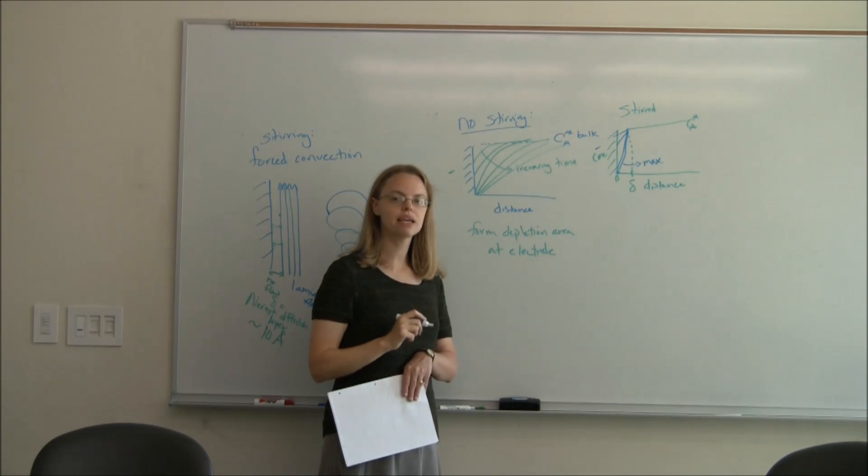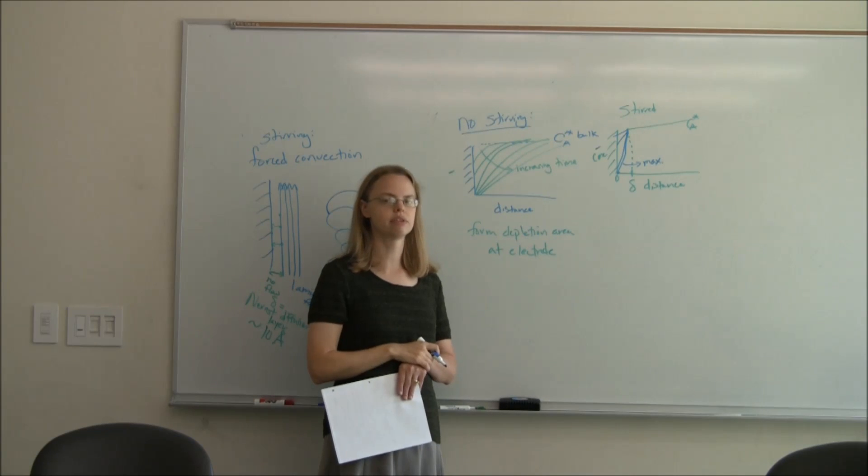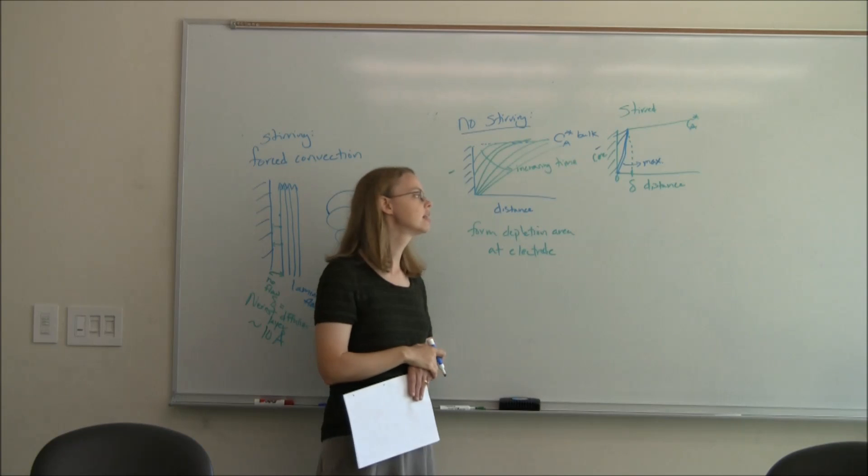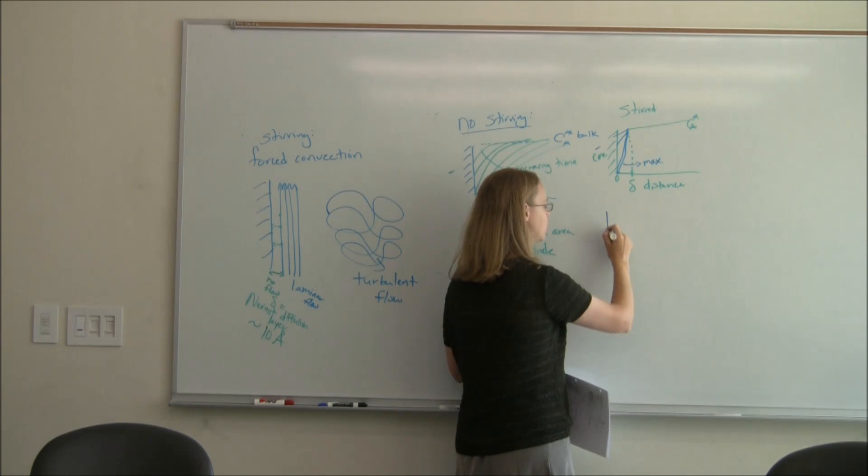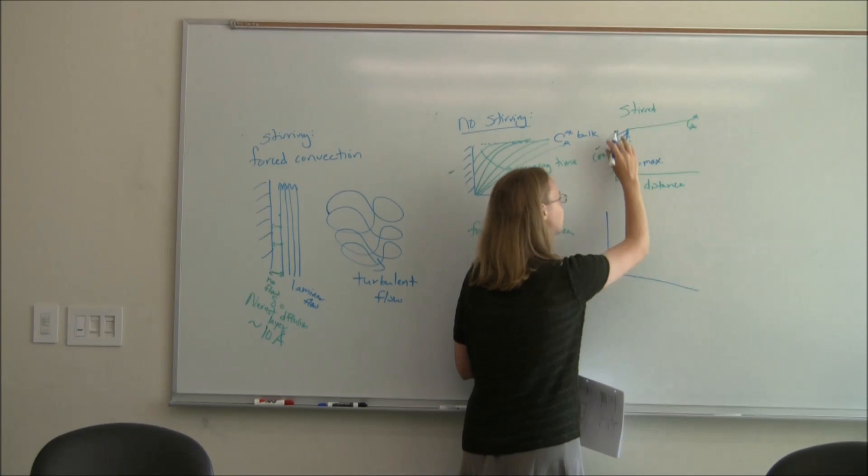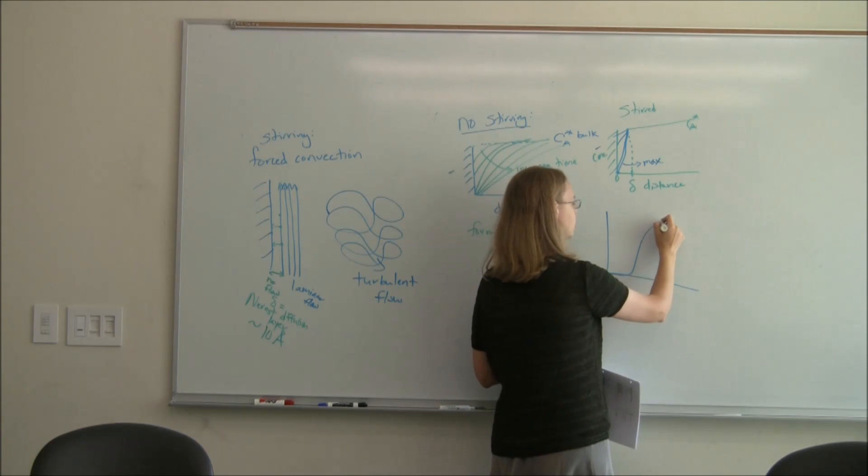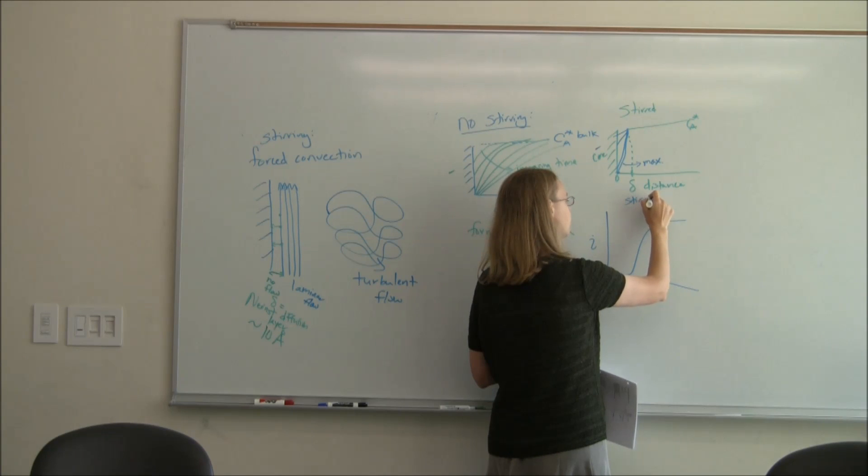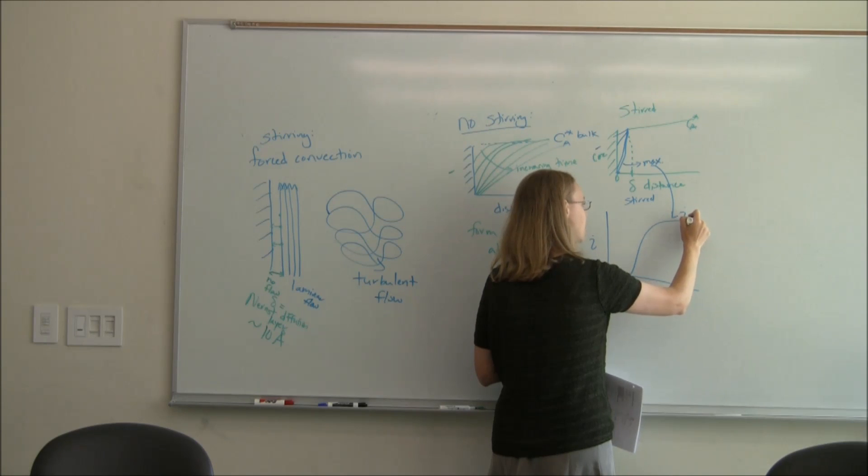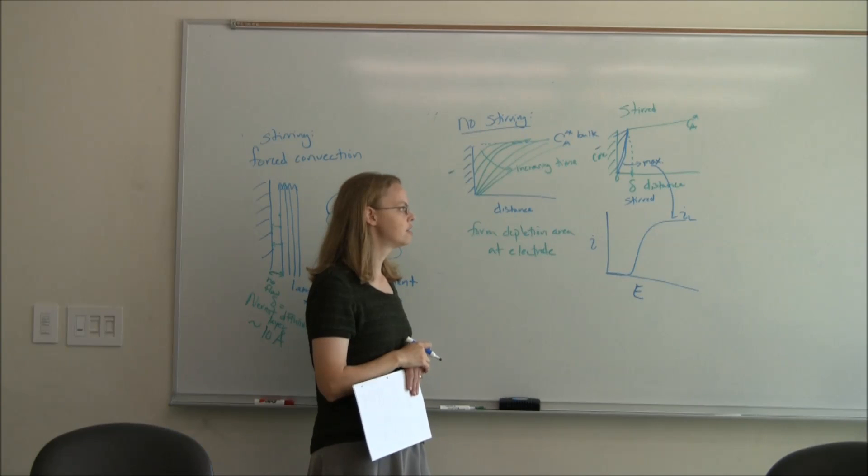And this is the maximum current that I can get. The maximum current I can get is if I've driven the concentration of A at the electrode to zero. If there's no concentration of A at the electrode, then I'm doing it at the maximum rate. And so if you look at how this kind of compares, then, to our curve, remember when we talked about this is what we would get for a stirred voltammogram. When I'm going here at the maximum, that's when I'm getting out my limiting current. And so I can continue to do that.